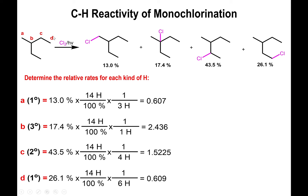Finally for type D: this carbon is bound to only one other carbon, so it is a primary carbon. The yield is 26.1%. Divide 26.1 by 100 and multiply by 14 total hydrogens in the reactant. Type D has six hydrogens total — three on each of the two equivalent carbons — so divide by six. The result equals 0.609.